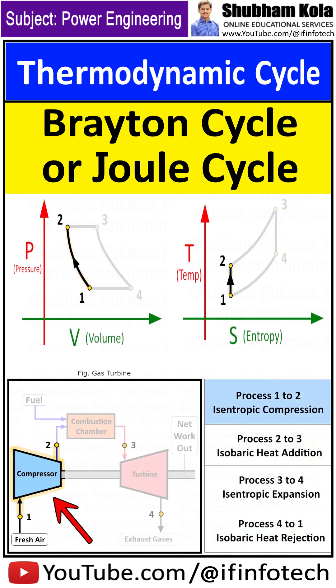Process 1 to 2 is isentropic compression, where the working gas helium is compressed adiabatically from state 1 to state 2 by the compressor.